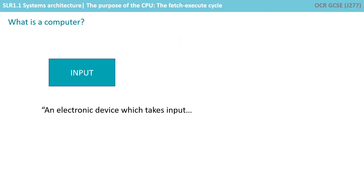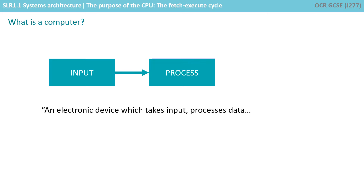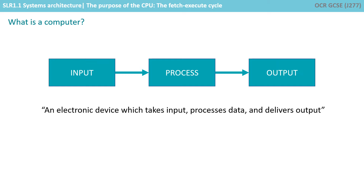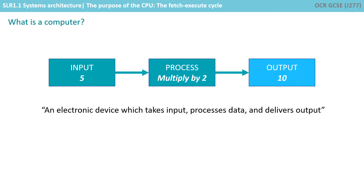A computer is defined as an electronic device that takes an input, processes data, and delivers output. In this simple example, you can see we're taking the input 5, we're multiplying it by 2 — that's our process — and we're outputting 10.